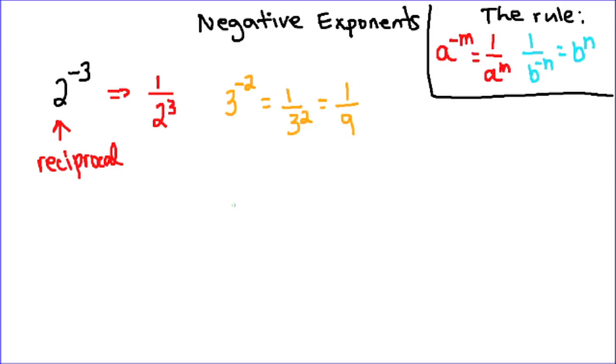The same is true when we work with variables. If I have a to the power of negative 5, the reciprocal of a is 1 over a, and that negative 5 turns into a positive 5.